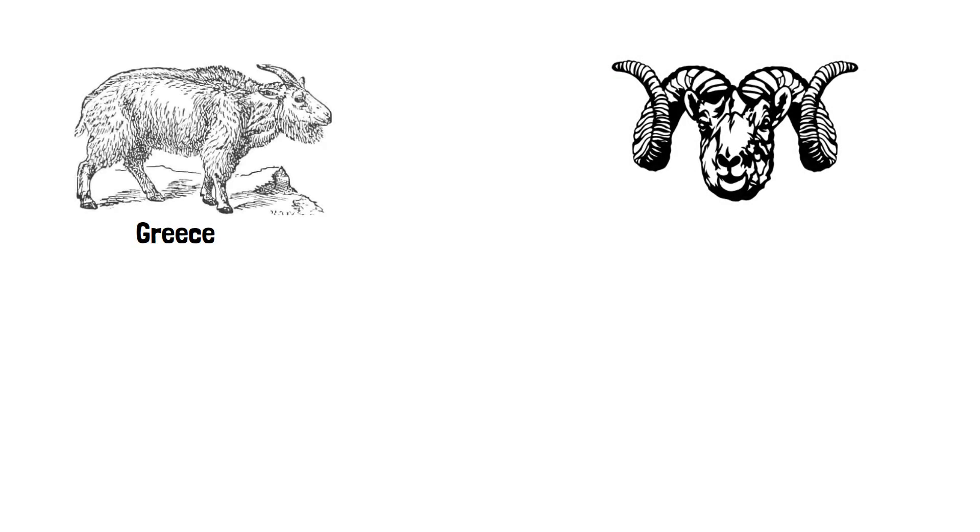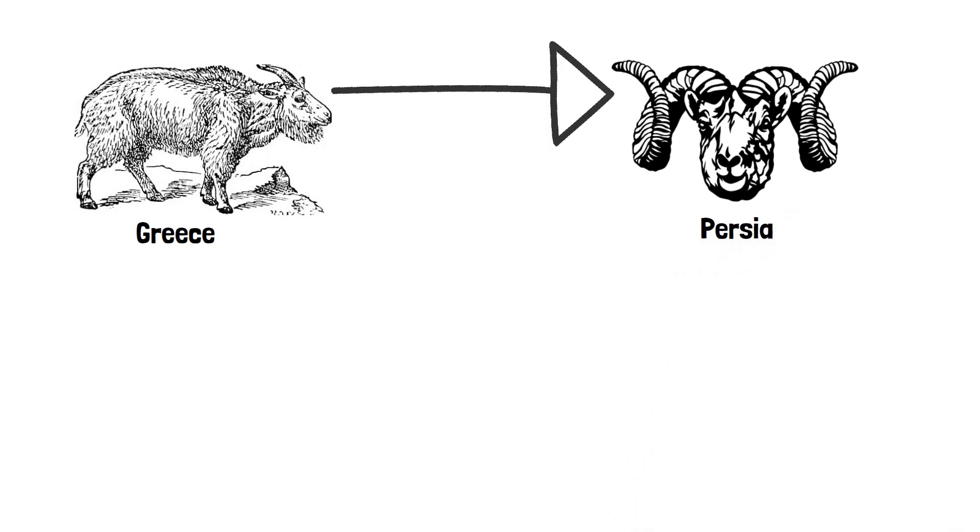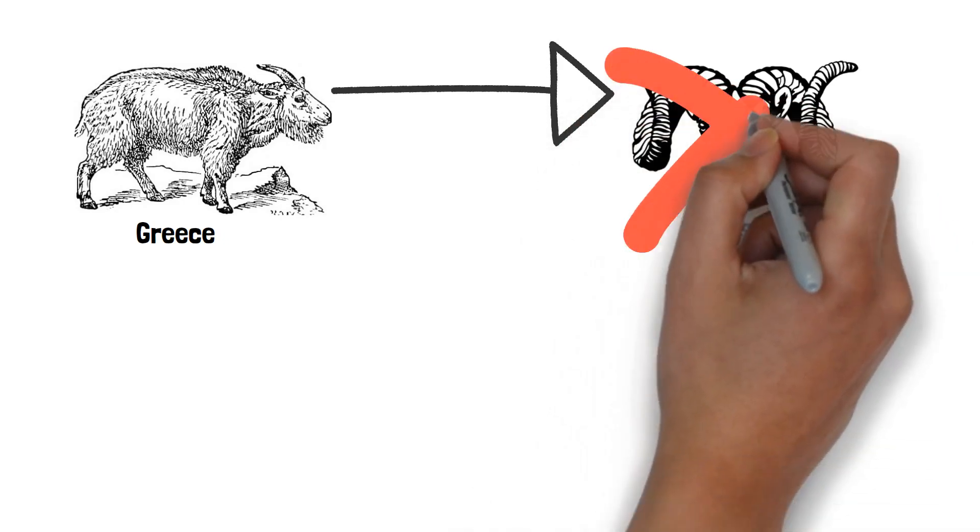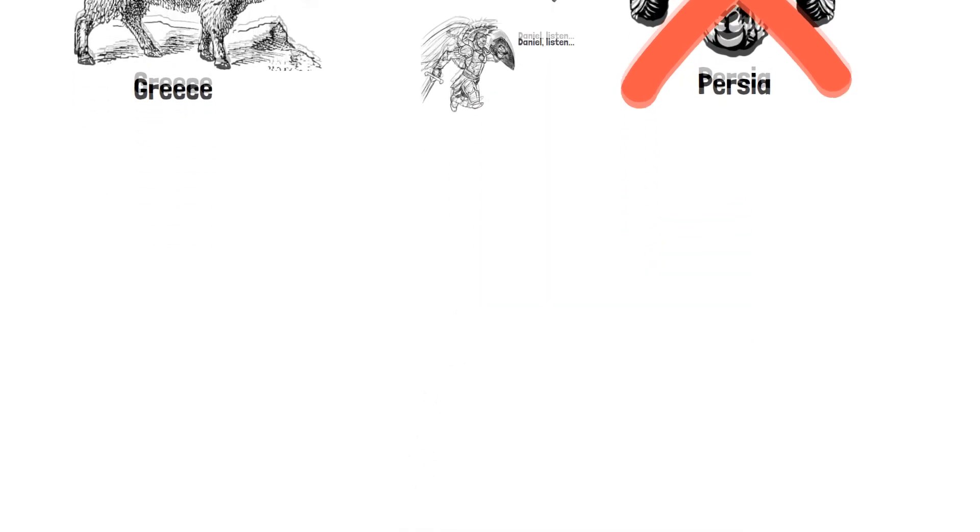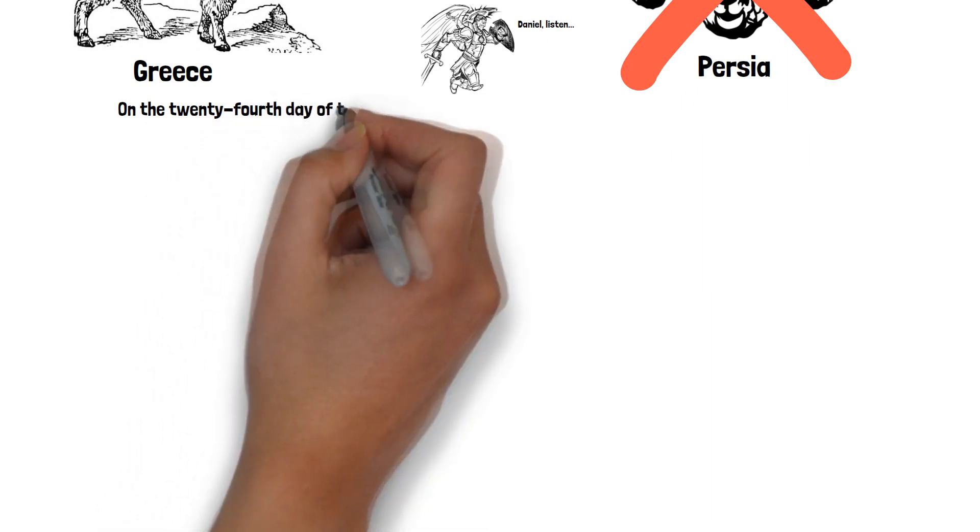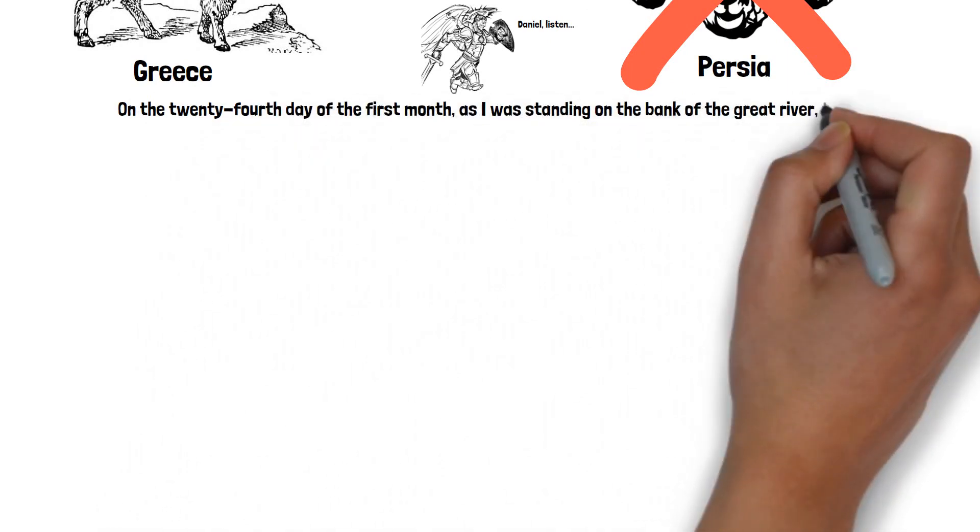There, Daniel is given a vision of a goat that represents Greece, one of the kingdoms, with a large horn. And that goat, with that large horn, comes rushing out from the west and crashes into the ram of the east, defeating the ram and its horns. And as the book of Daniel then states, Daniel is visited by a mighty spiritual being and is informed of the following: On the 24th day of the first month, as I was standing on the bank of the great river, the Tigris,